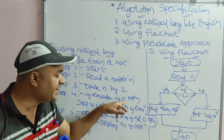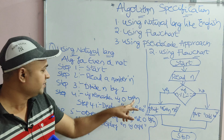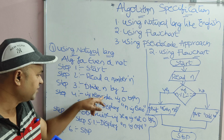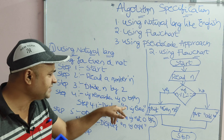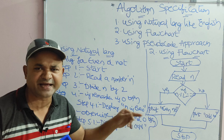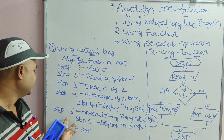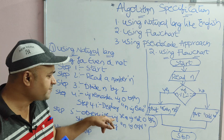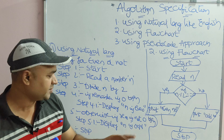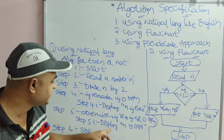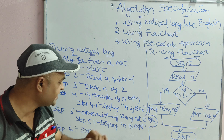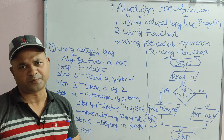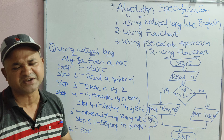Step 4: if the remainder is 0, then display the number as even number. Step 5: otherwise, if the remainder is not 0, then display the number as odd number. Step 6 is stop. This is the first approach.